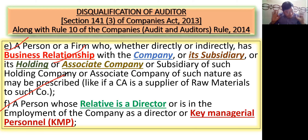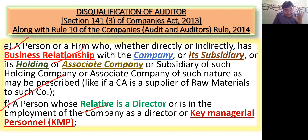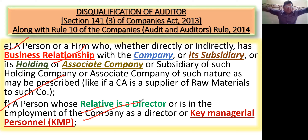मेरे father उस company के KMP हैं, तो भी मैं उस company का auditor नहीं बन सकता। Simple — a person whose relative is a director or is in the employment of the company as a director or key managerial person, तो मैं उस company का auditor नहीं बन सकता।